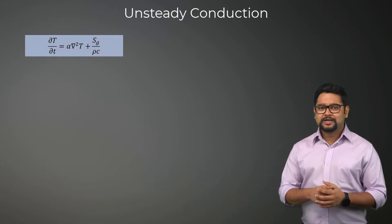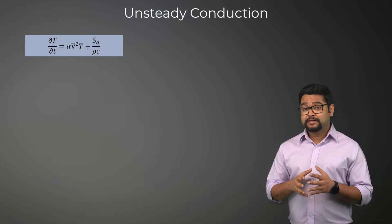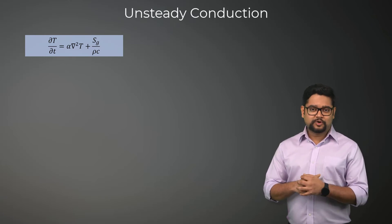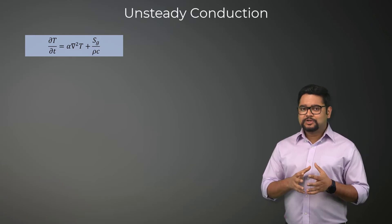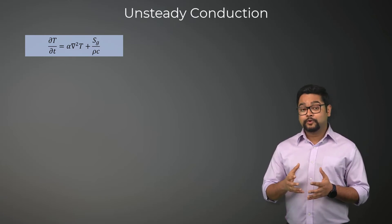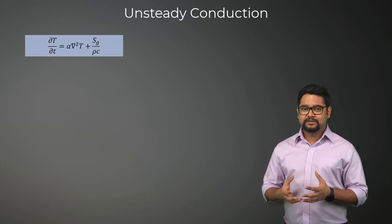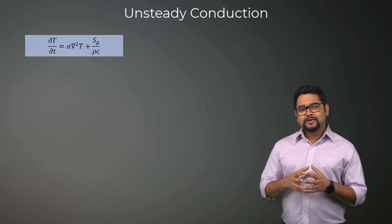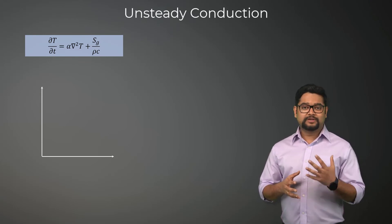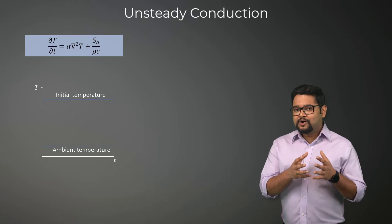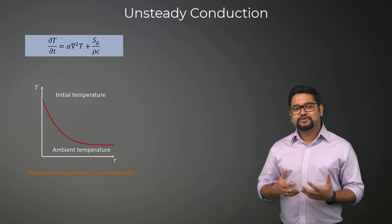Let's start our analysis by examining the unsteady conduction equation for constant properties. Its solution will now be a function of both space and time, and properties such as density, specific heat, and thermal conductivity will influence the time scales of unsteadiness, i.e., how fast or slow a given transient occurs.